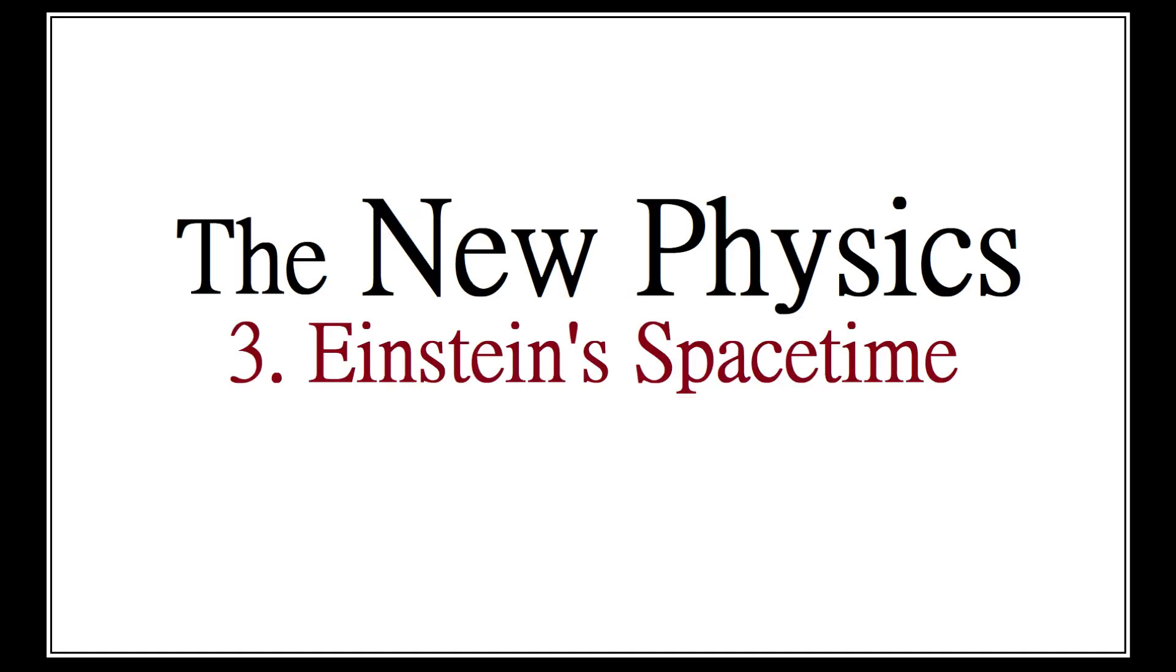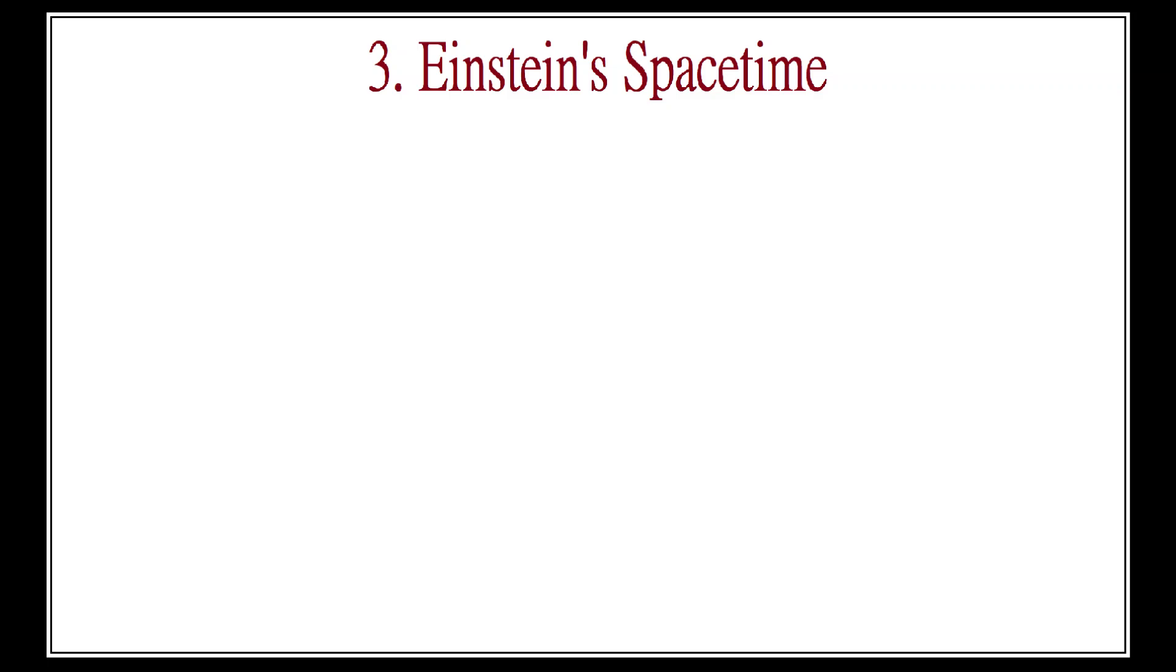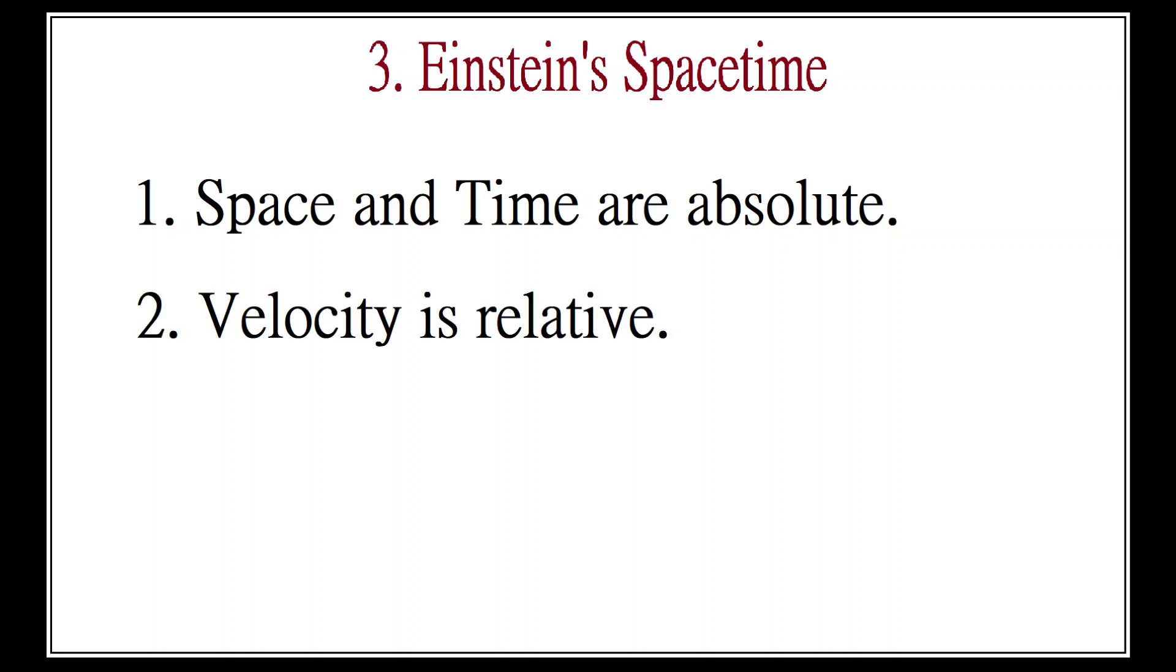We have before us three concepts. First, space and time form an absolute reference grid independent of all observers. Second, speed is always relative to a given observer who is treated as stationary.